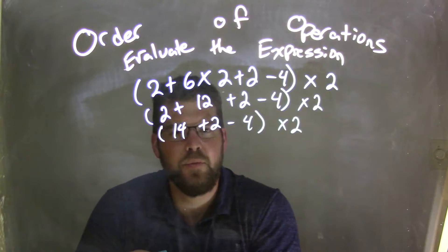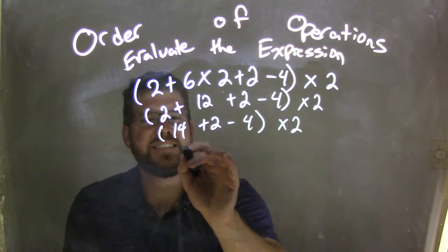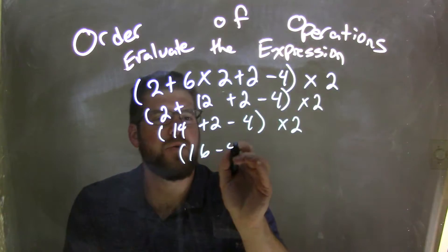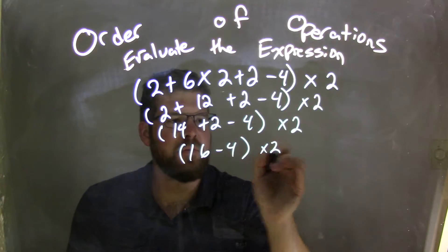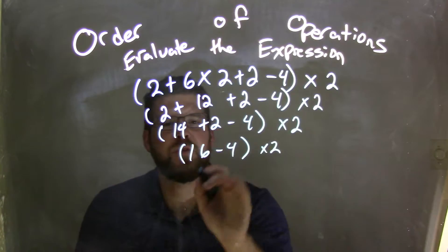Then simplify again what's in the parenthesis. 14 + 2 is 16 minus 4, times 2. And 16 - 4 comes out to be 12.